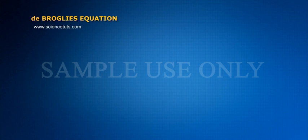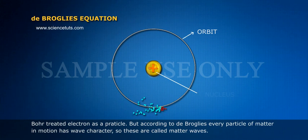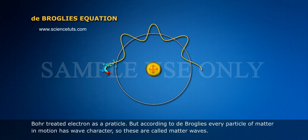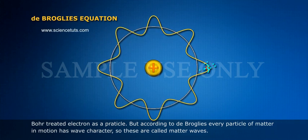De Broglie's Equation. Bohr treated electron as a particle. But according to de Broglie, every particle of matter in motion has wave character. So these are called matter waves.